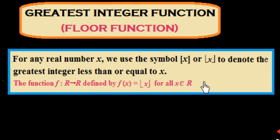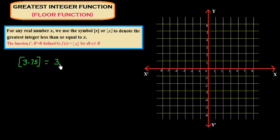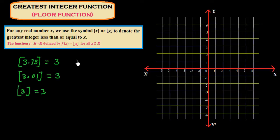I would like to explain with an example. If we have to find the greatest integer function of 3.75, it would be 3 — the greatest integer less than or equal to this number is 3. The greatest integer function of 3.01 is also 3. The greatest integer function of 2.71 is 2, and the greatest integer function of 0.32 is 0.